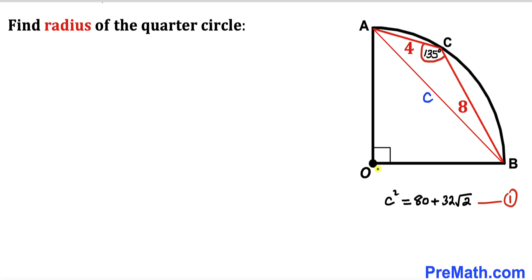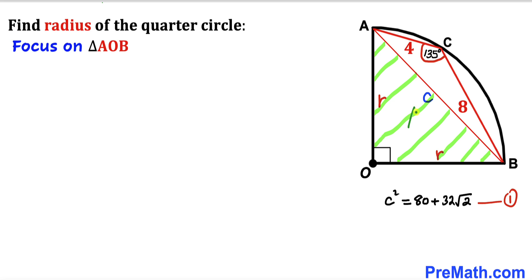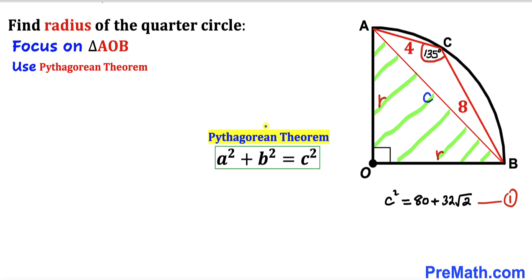Now we observe that OB and OA are both radii of the quarter circle, each equal to r. Let's focus on the right triangle AOB and use the Pythagorean theorem to calculate the radius r.